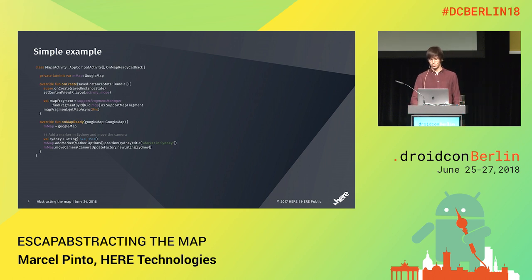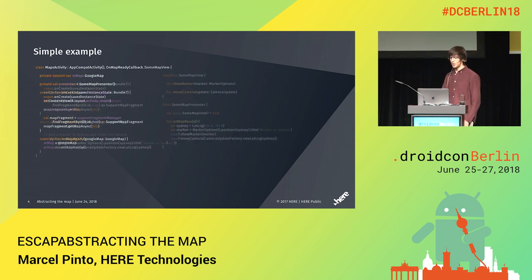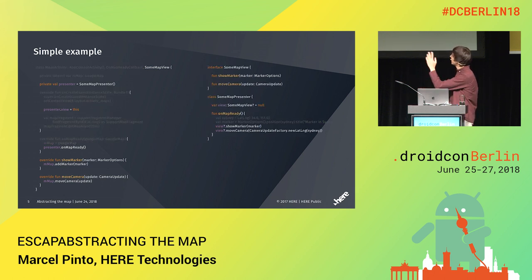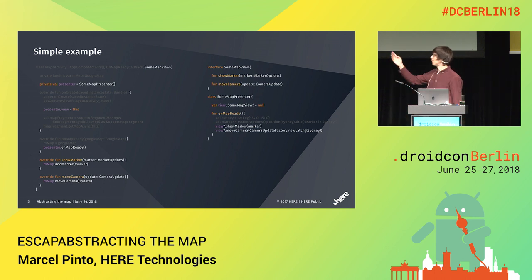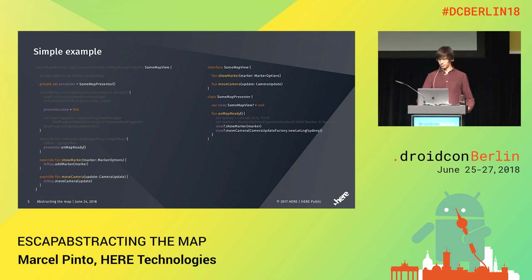Let's do a simple abstraction first — a really simple MVP where you have your presenter, you have your view, the activity attaches itself to the presenter, and then when the map is ready, the view will let the presenter know. The presenter will apply some business logic and call the view. Simple and easy.